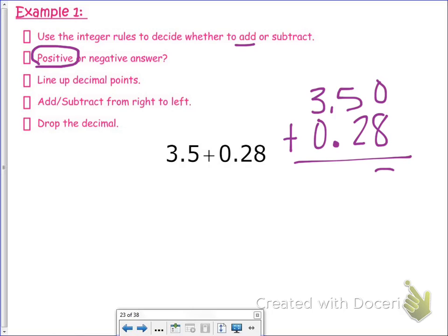So then we just add like normal: 8, 7, bring down the decimal point, and 3. Notice the big thing that we did here was that the decimal stayed lined up. As you notice, it is nice and pretty, all lined up in this place right here, and that's how it's supposed to be.